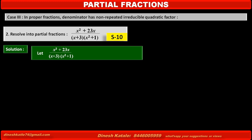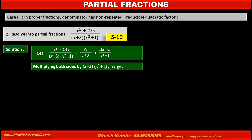So we can write our first step as: let the given fraction (x² + 23x) / [(x+3)(x²+1)] equal A/(x+3) plus (Bx+C)/(x²+1). To remove the denominators of each term, we multiply both sides by (x+3)(x²+1), which is the LCM of these denominators.